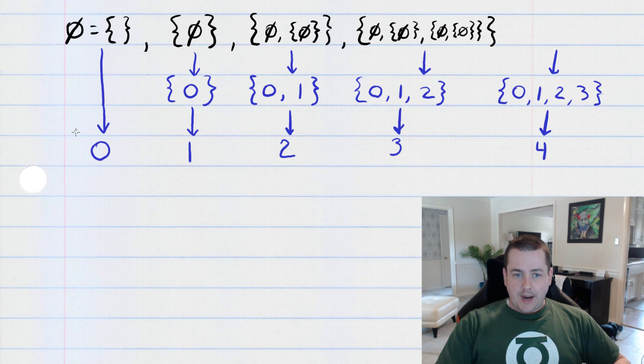But anyway, that's why I prefer having zero as a natural number. If you ask me what the set of natural numbers is, well, I'll say it's the set containing zero, one, two, three, four, and so on.